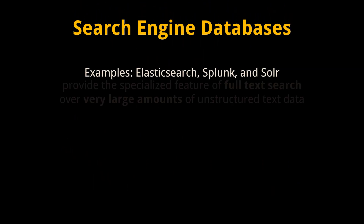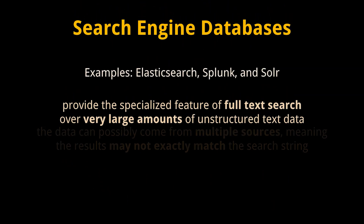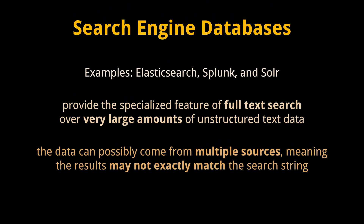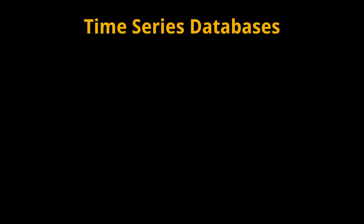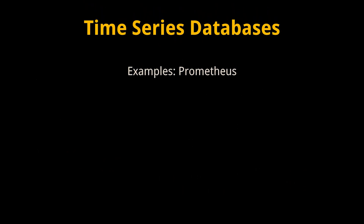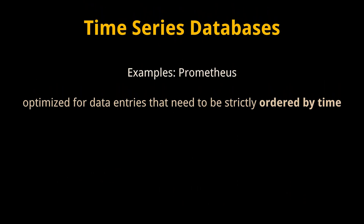Search engine databases provide the specialized feature of full-text search over very large amounts of unstructured text data. This data can possibly come from multiple sources, meaning the results may not exactly match the search string. The top search engine databases in the industry are Elasticsearch, Splunk, and Solr.